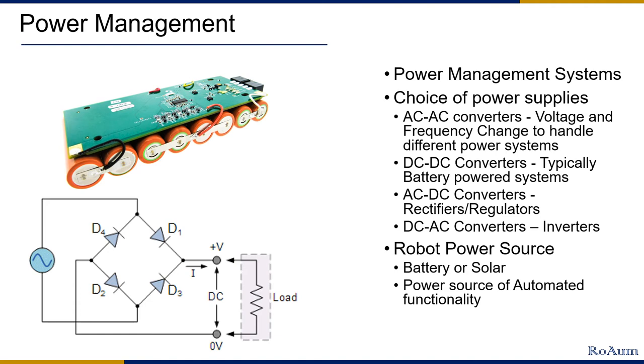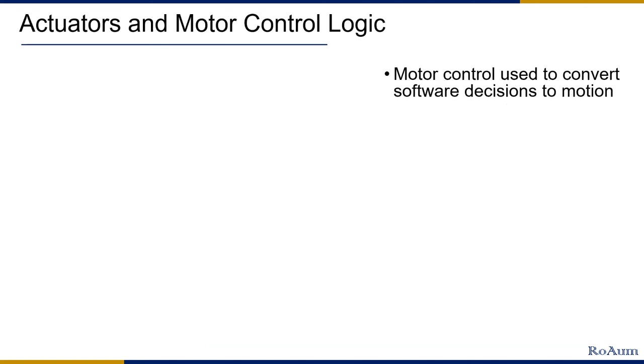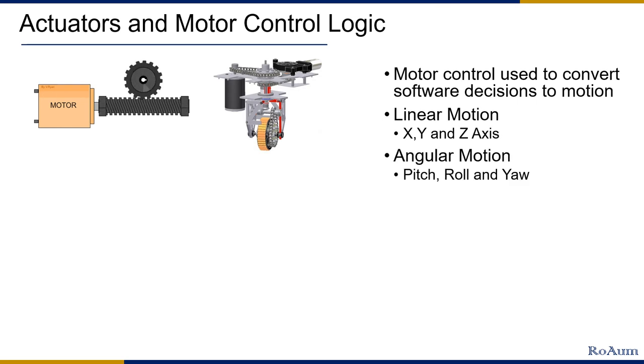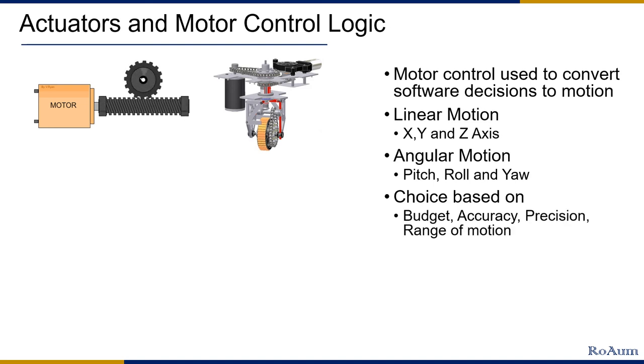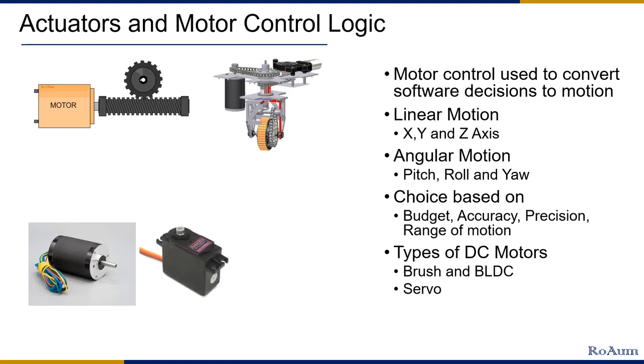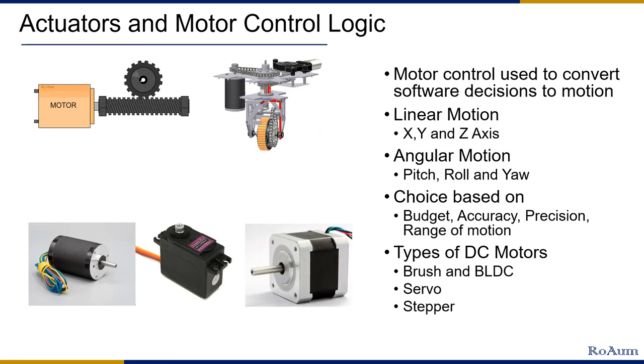Motor control helps in converting software decisions to transfer of motion and mechanical power to get a specific work done. There is a need for motion and power transfer in different directions and dimensions. Linear motion in X, Y and Z axis and angular motion like pitch, roll and yaw can be achieved by employing motors. There are different types of motors for different kind of applications based on budget, accuracy, precision and range of motion. Brushed and brushless DC motors are used for high torque continuous motion applications. Servo motors are used for high torque continuous motion applications by employing feedback to achieve precision. While stepper motors are used for low torque, precise, slow and limited range motion applications.